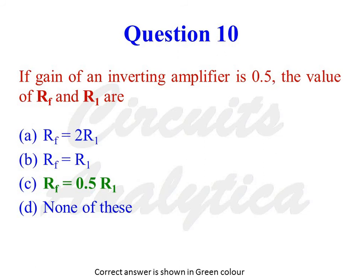If the gain of an inverting amplifier is 0.5, the values of Rf and R1 are — the options are: Rf = 2R1, Rf = R1, Rf = 0.5 R1, or none of these. The correct answer is Rf = 0.5 R1. We know that in an inverting amplifier, gain Af = −Rf / R1. Since gain = 0.5, that means 0.5 = Rf / R1, so Rf = 0.5 R1.